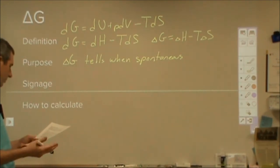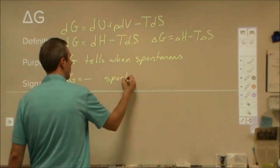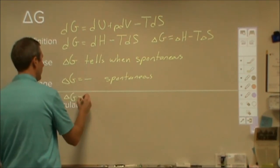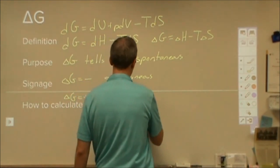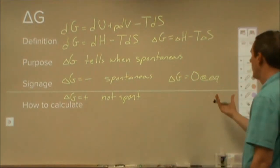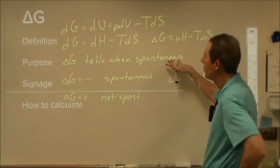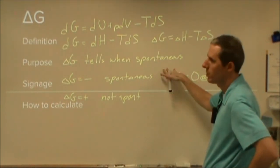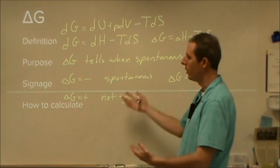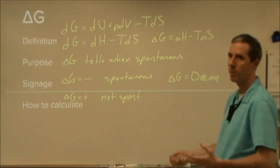Both enthalpy and entropy have highly technical definitions, but their biggest purpose is to combine using this equation to give us a new quantity that can make predictions. The purpose of delta G is that it tells us when something is spontaneous, not spontaneous, or at equilibrium — whether something will happen on its own without any work being done. If delta G is negative, the process is spontaneous and will occur. If delta G is positive, it's not spontaneous. If delta G is zero, we're at equilibrium with minimized Gibbs free energy. Gibbs free energy also represents a theoretical limit on how much energy you can extract from a chemical process to produce work.